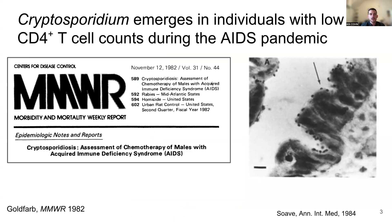Since that time, cryptosporidium has become appreciated as a cause of severe diarrhea and death in individuals with impaired CD4 T-cell function, as in the setting of AIDS, but also in immunosuppression during organ transplantation and in primary immunodeficiencies. Despite its appreciation as a human pathogen since the 1980s, the mechanisms whereby CD4 T-cells protect against cryptosporidium infection and establish immune memory have remained poorly understood.